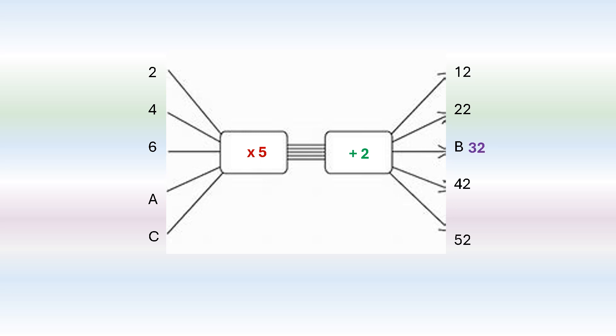Now if we have the output but we want to find the input, we have to work in reverse. So we're going to say 42 subtract 2 is 40. Then we take the 40 and we divide it by 5 and we're going to get 8. Now we'll do the same thing with 52. 52 subtract 2 divided by 5 gives you an answer of 10.